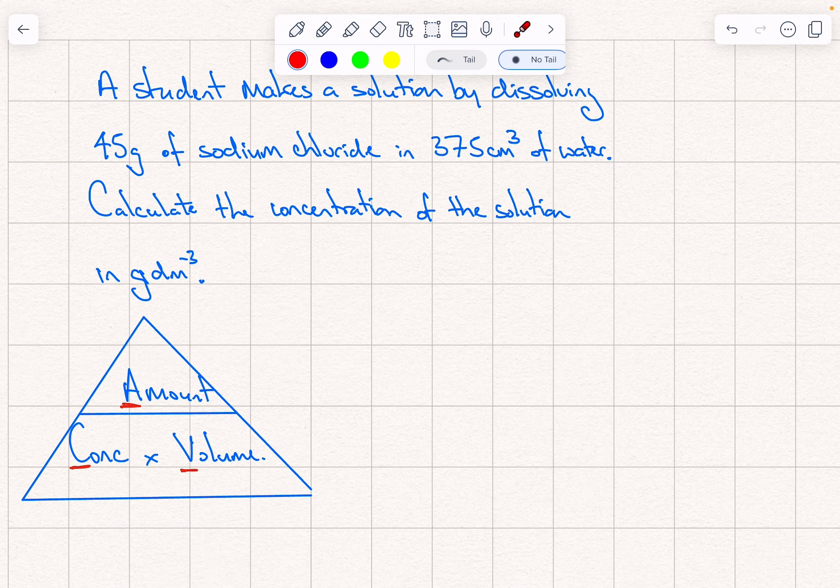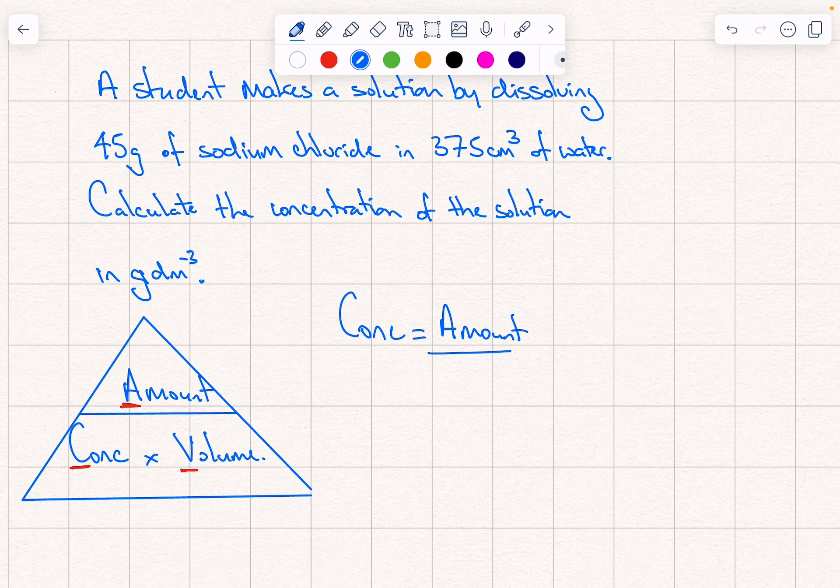The concentration triangle is amount, concentration, and volume. Because we've been asked to find the concentration, the concentration from the triangle is the amount divided by the volume. So the amount in the question is 45, the volume we've got to be careful here.